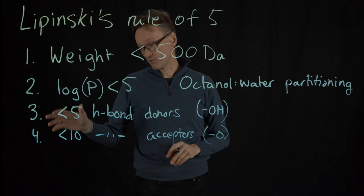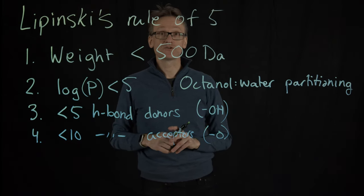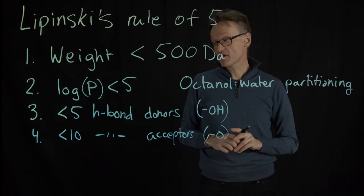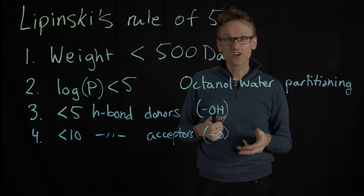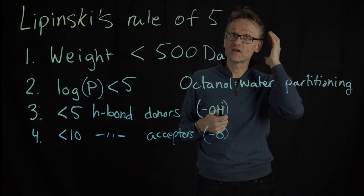Both rule three and four refer to the fact that if there are too many hydrogen bond donors and acceptors, this small molecule would be very hydrophilic. And if it's very hydrophilic, it's certainly going to be very soluble in the blood, which is good. But then it will not be able to go through, say, the membrane and in particular the blood-brain barrier.